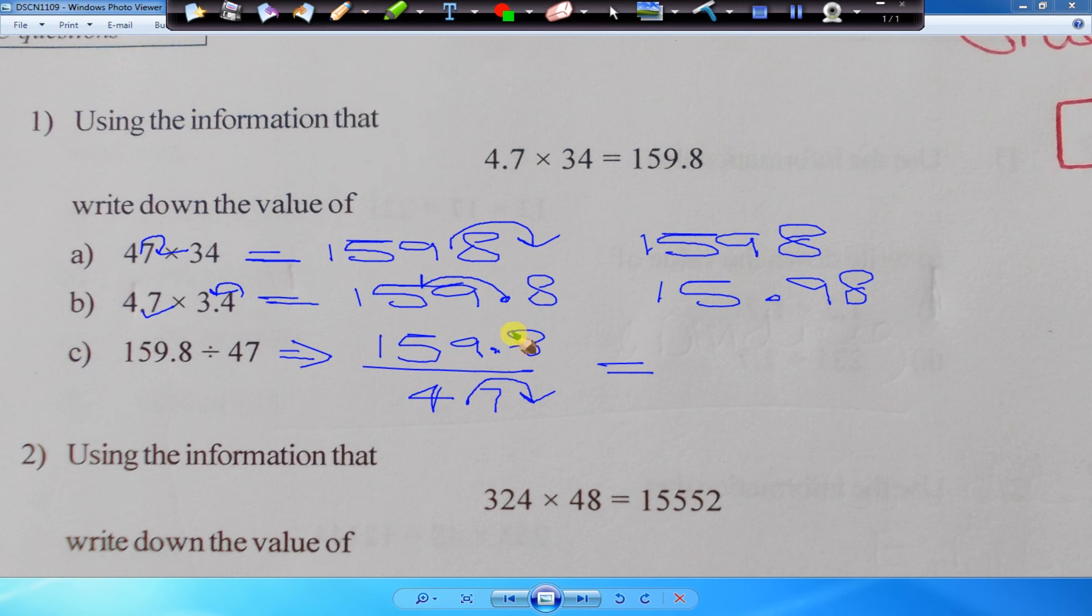So the answer should have been what? When you divide this number by this number, you get 34. So we made the bottom ten times bigger, we're going to make the answer ten times smaller. So the answer becomes 3.4 rather than 34.